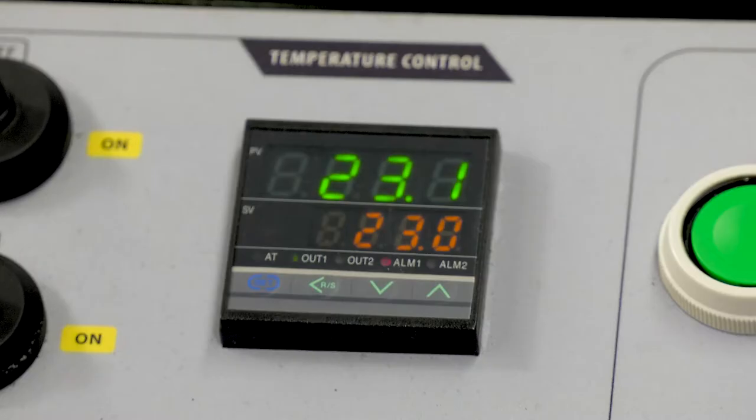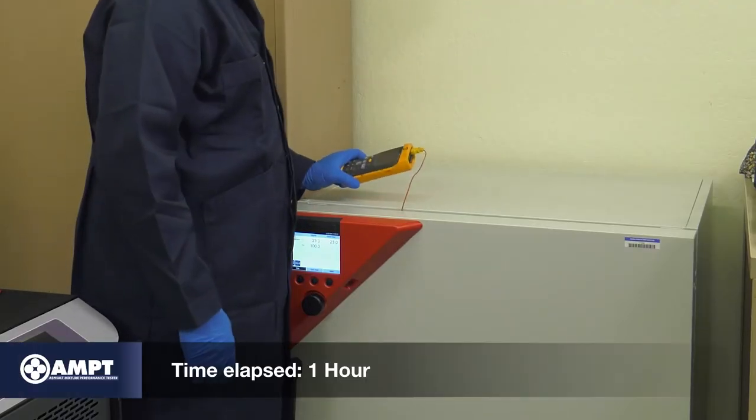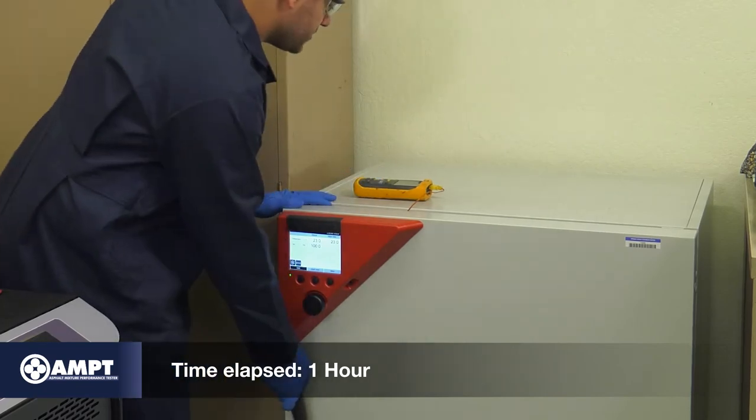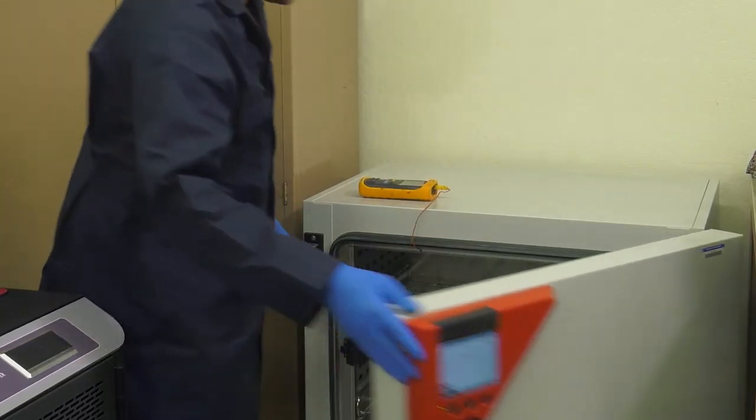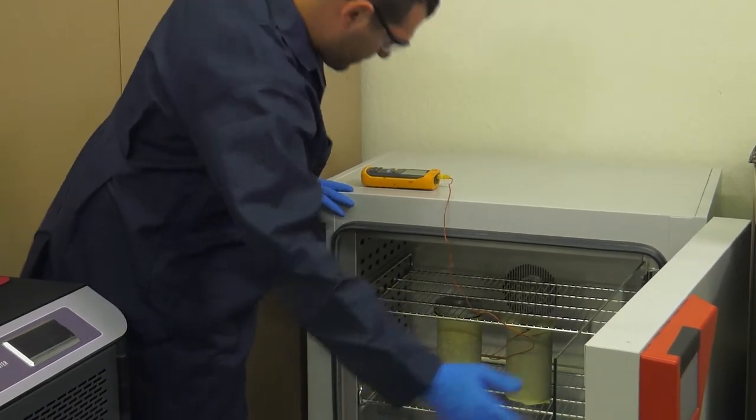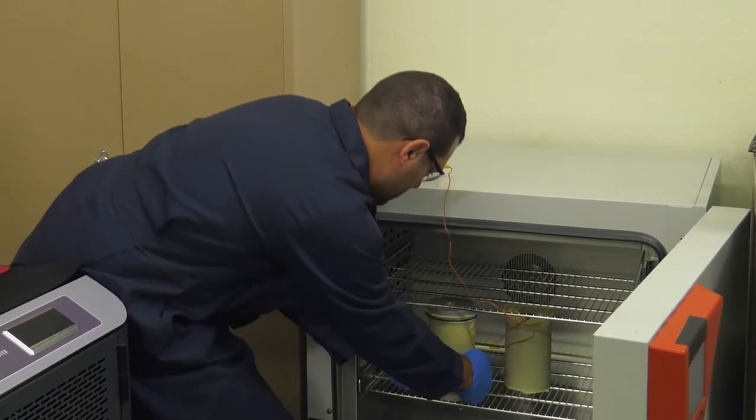Turn on the AMPT and set the temperature control to the desired test temperature and allow the AMPT conditioning chamber to equilibrate for at least one hour. Once the chamber is conditioned and the dummy specimen has reached the target temperature, start setting up the test specimen in the AMPT conditioning chamber.